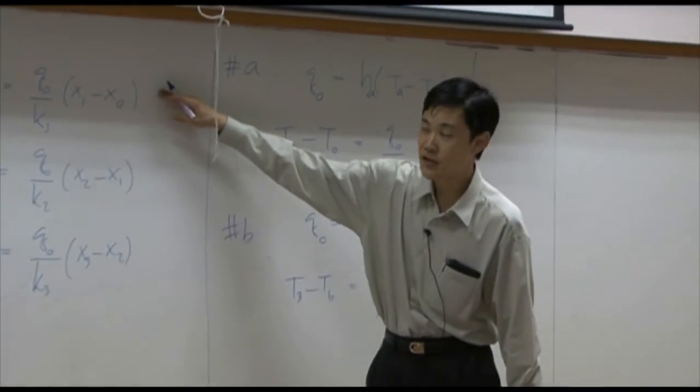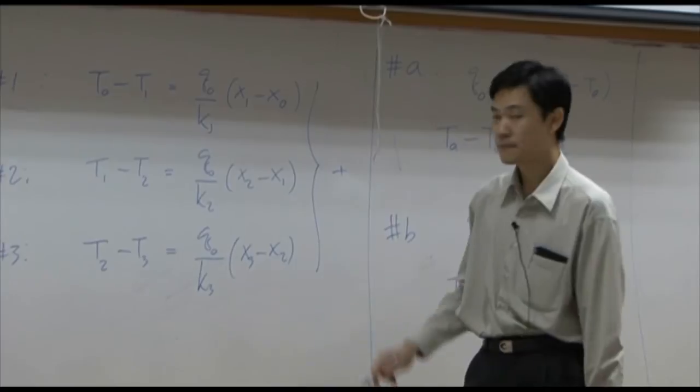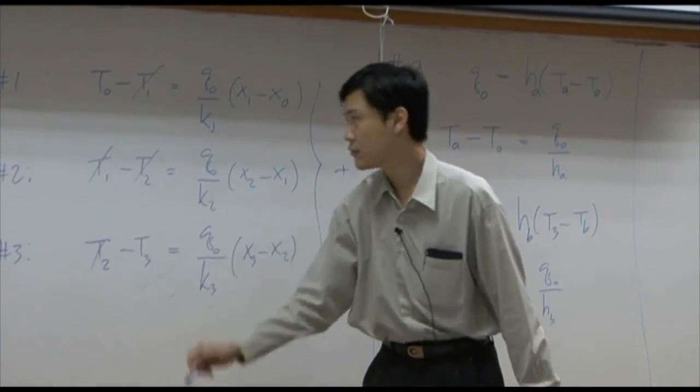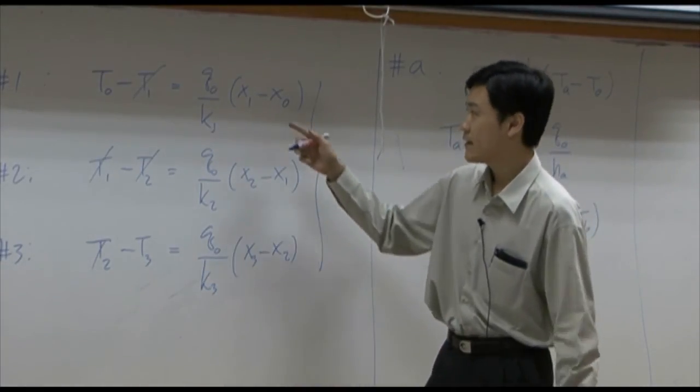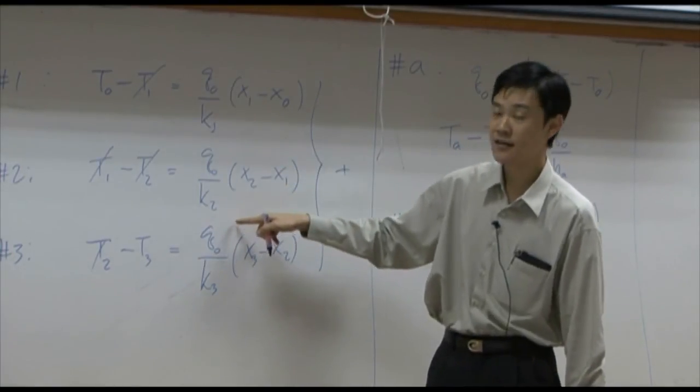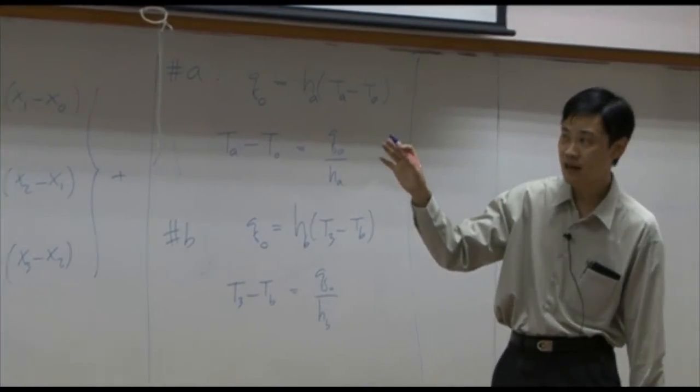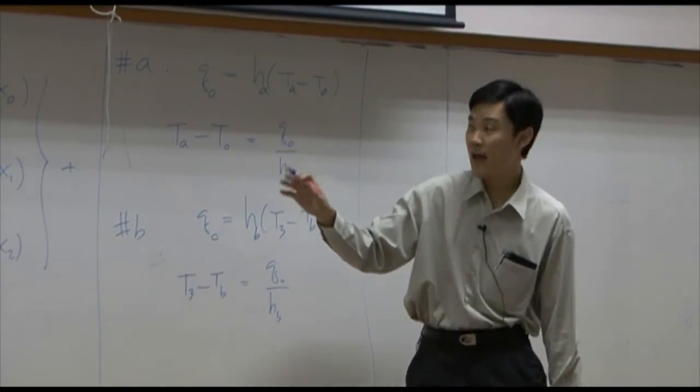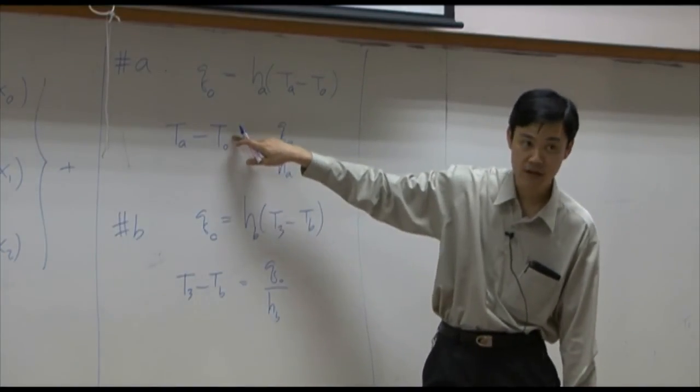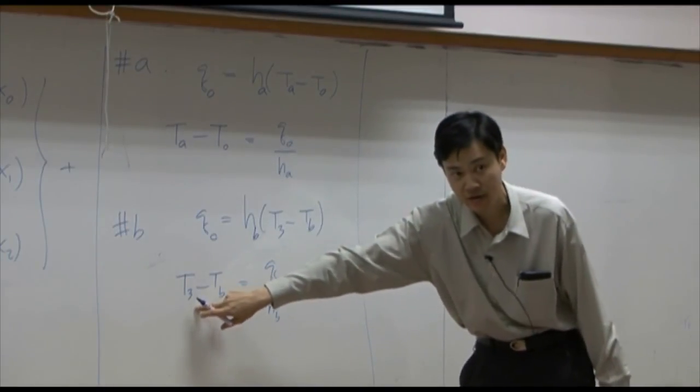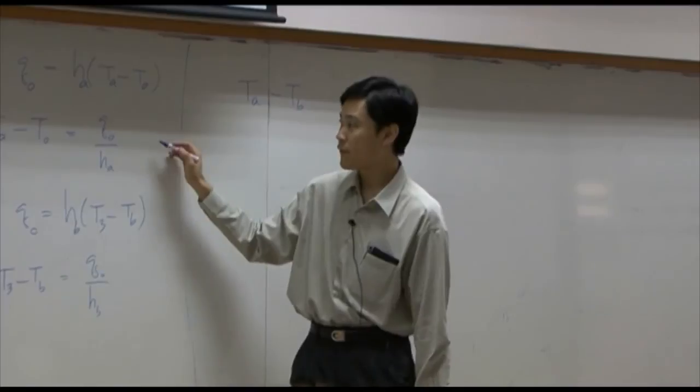So if you take the first equation, second equation, and third equation, combine them together. If you add them out, this term cancel out, you get T0 minus T3. Again, q0, they are the same. You can take it inside. What you have left on the left hand side is T0 minus T3. If you also add with these two equations, T0 there and T0 there cancel out, T3 and T3 there cancel out. What you have left would be TA minus TB.